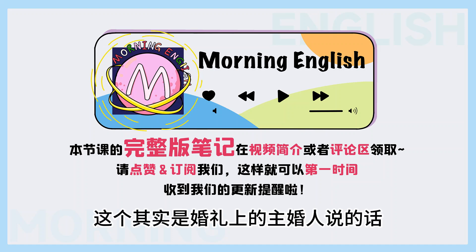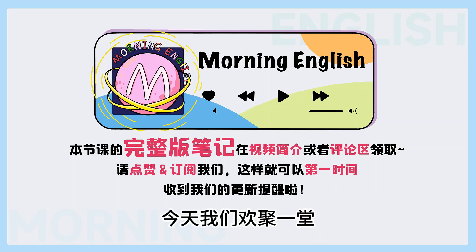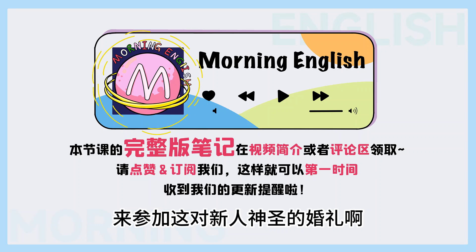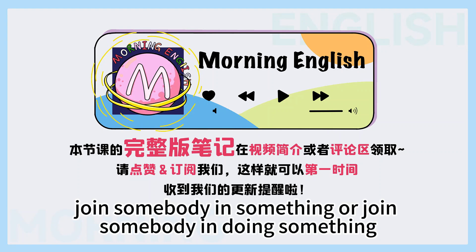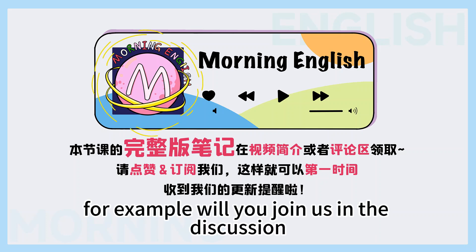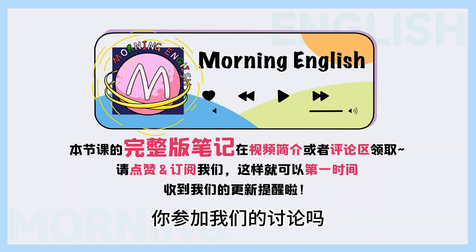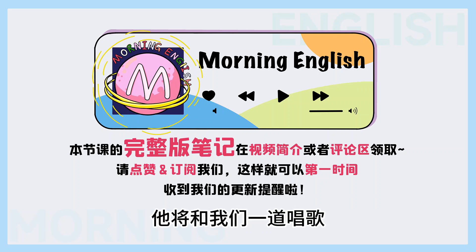这个 matrimony 就是婚礼的意思。所以呢，这个其实是婚礼上的主婚人说的话：亲爱的朋友们，今天我们欢聚一堂来参加这对新人神圣的婚礼啊。它这里就用到了一个结构：join somebody in something，或者 join somebody in doing something，也就是和某人一道做某件事。For example, will you join us in the discussion? 你参加我们的讨论吗？He'll join us in singing the song. 他将和我们一道唱歌。